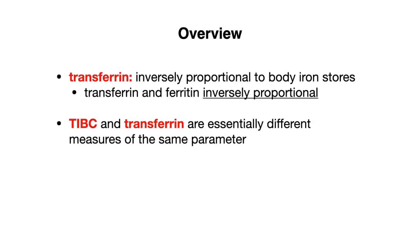Let's start with an overview. Two major principles that you need to know when looking at iron studies: transferrin, which is a transport protein, is actually inversely proportional to body iron stores. This basically means that transferrin and ferritin, which is our storage protein, are inversely proportional — so when one goes up, the other is always going to go down.